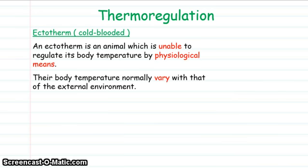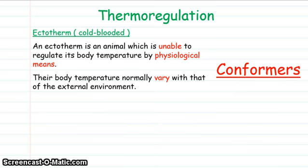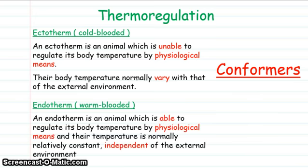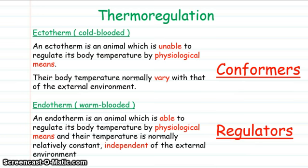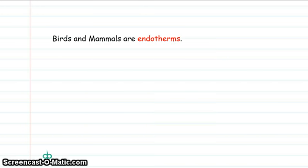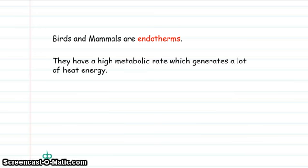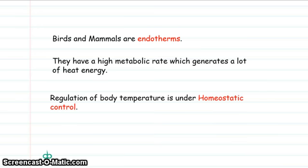Ectotherms are cold-blooded animals. They're unable to regulate body temperature by physiological means and are generally conformers. Endotherms, on the other hand, are warm-blooded creatures that use physiological mechanisms to maintain a steady state inside their body independent of external abiotic factors — these organisms are considered regulators. Birds and mammals are endothermic, so they expend lots of energy in order to generate body heat as part of their homeostatic mechanisms.